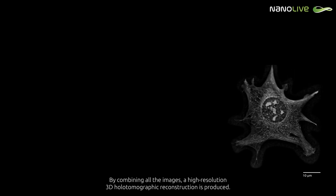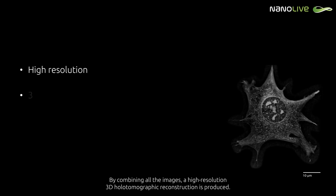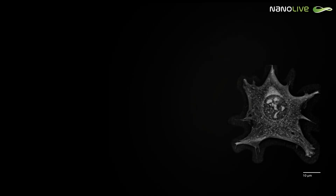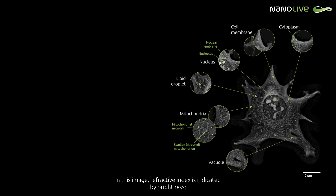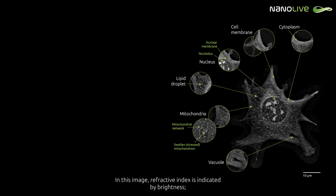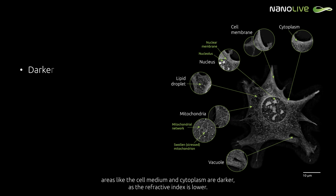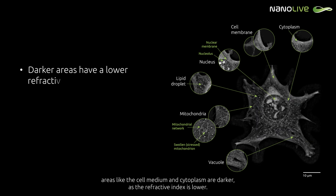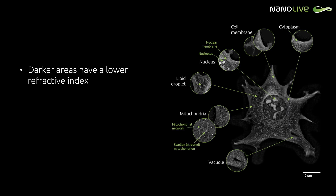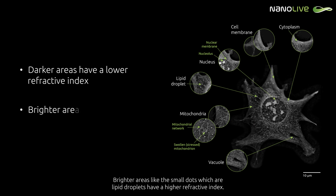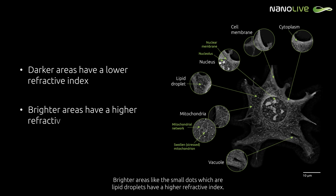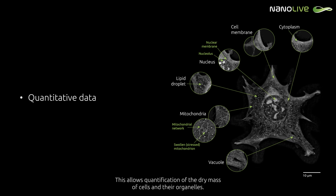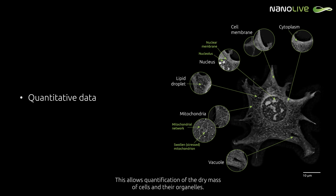By combining all the images, a high-resolution 3D holotomographic reconstruction is produced. In this image, refractive index is indicated by brightness. Areas like the cell medium and cytoplasm are darker as the refractive index is lower, while brighter areas like the small dots — which are lipid droplets — have a higher refractive index. This allows quantification of the dry mass of cells and their organelles.